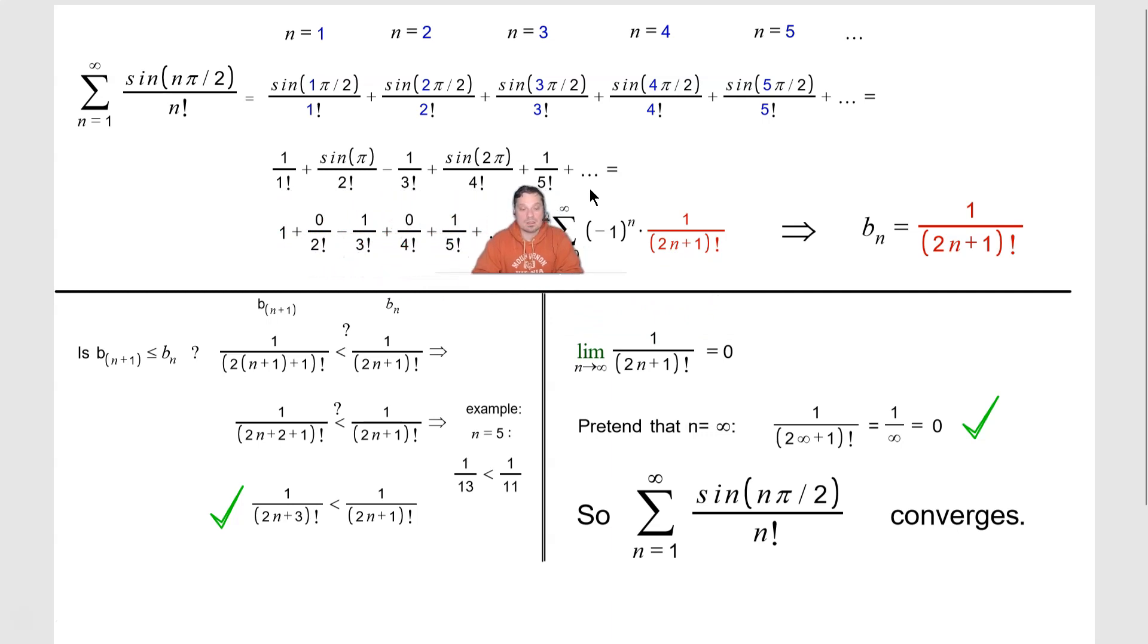And the ones, for example, like the one with the 4 on the bottom and the 2 on the bottom, those would be 0 over 2 factorial, 0 over 4 factorial. Clearly those would go away. That's why you need only 2n plus 1.